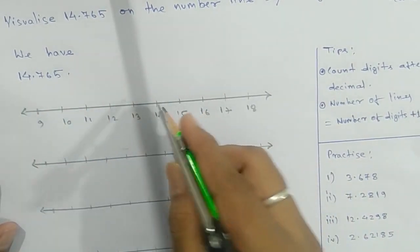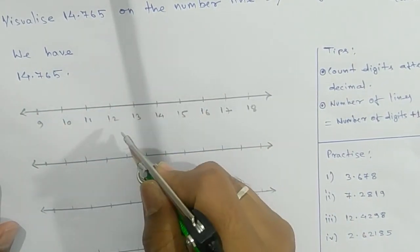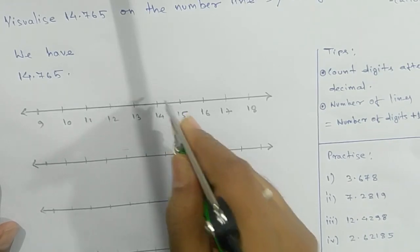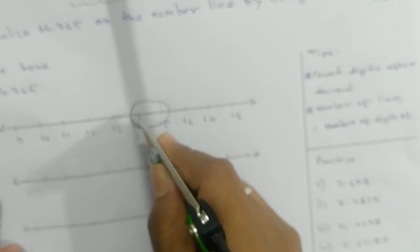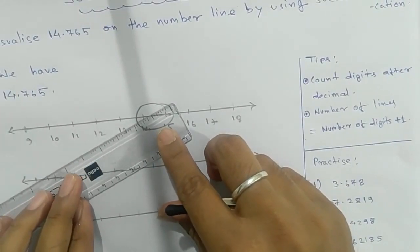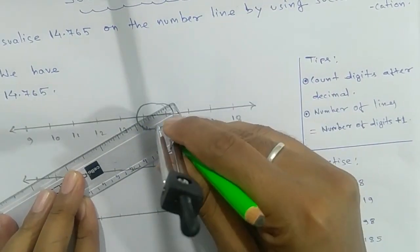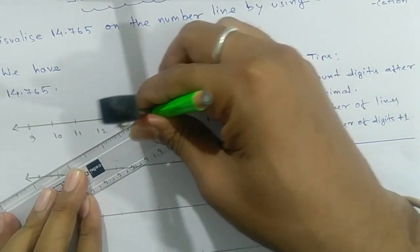14.765 lies between 14 and 15. Our target is successive magnification. Magnification means using a magnifying glass. If you take the magnified glass and see this part, you can see that 14 is here.